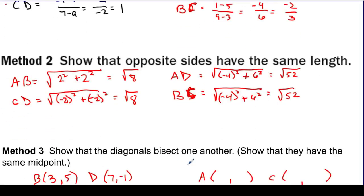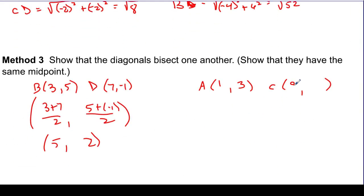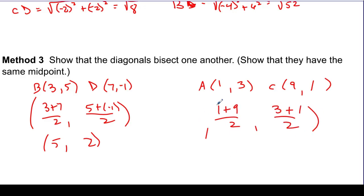A is at (1, 3) and C is at (9, 1). The midpoint of AC is 1 plus 9 over 2, comma 3 plus 1 over 2, which is 10 over 2 = 5, and 4 over 2 = 2. So the midpoint of AC is also (5, 2). The midpoint of BD equals the midpoint of AC, showing that the two diagonals are bisecting each other — and that proves this quadrilateral is a parallelogram.